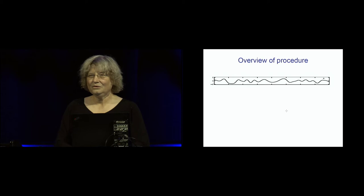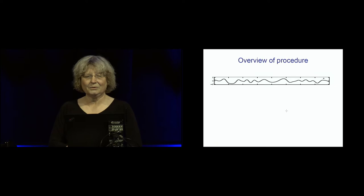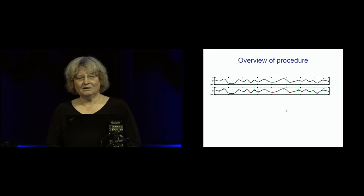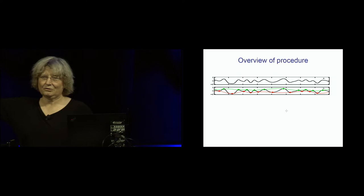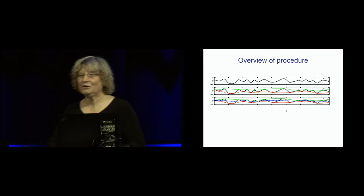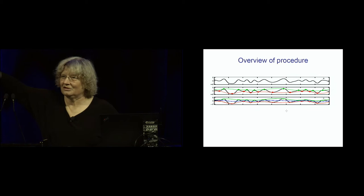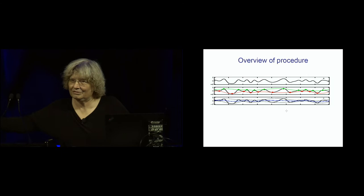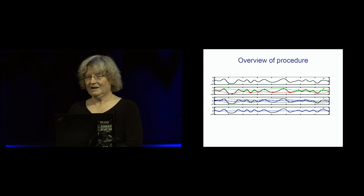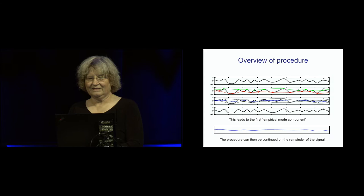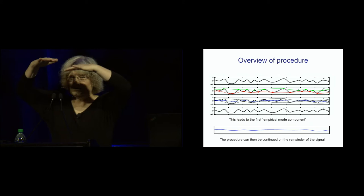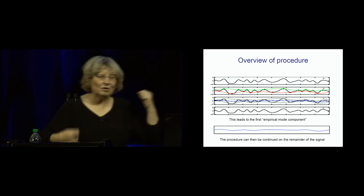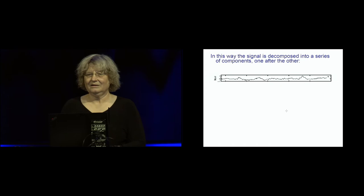In Huang's Empirical Mode Decomposition, you look at all the maxima and minima of a signal, find a cubic B-spline through the maxima and one through the minima, and compute their average. If the signal were not varying, the maxima and minima would lie at the same place and you'd get a constant line in the middle. But because they are varying, that average oscillates itself, and that oscillating average is treated as a lower-frequency component. The difference between the original signal and that average is then examined — though it doesn't always look very nice because of all the complications.